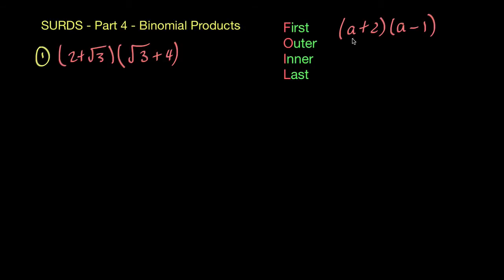Just to give you a quick refresh on that: we multiply the first terms inside the brackets, so A multiplies onto A. Then we multiply the outer ones — we've got A here and on the other outside we've got the 1, so we do a second multiplication there. Then you have your inner terms that get multiplied, so the 2 multiplies onto the A. And then you have the last terms — the 2 and the minus 1 — so we multiply those as well.